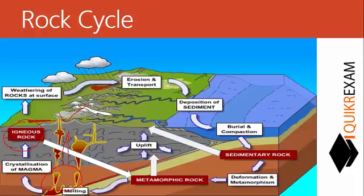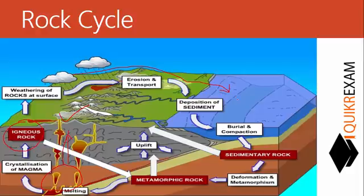On Earth's surface, two phenomena occur: weathering and erosion, which happen due to water, air, or other conditions. These sediments get collected into water bodies and deposition of sediments occurs. Due to burial and compaction, the sediments get converted into sedimentary rocks.